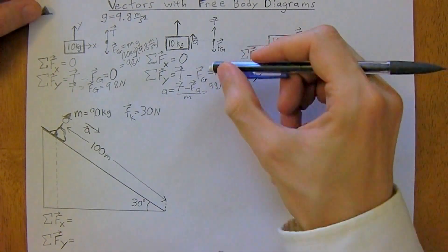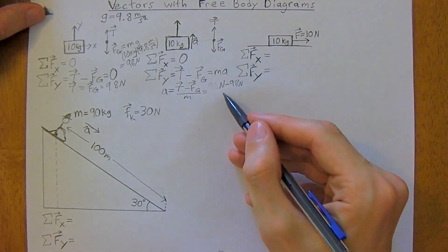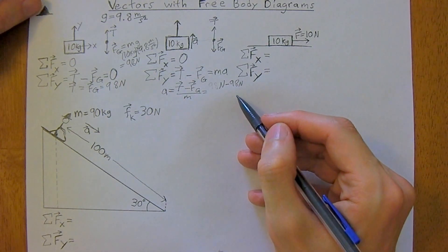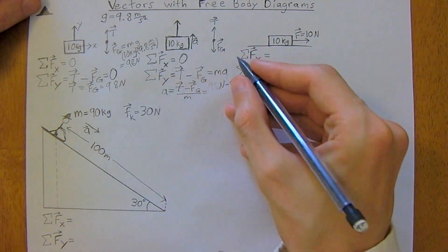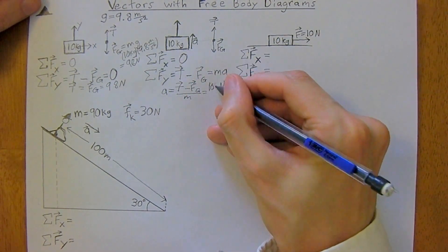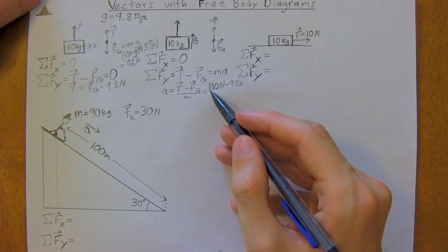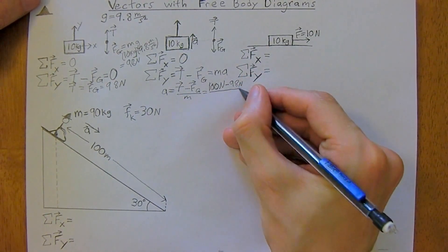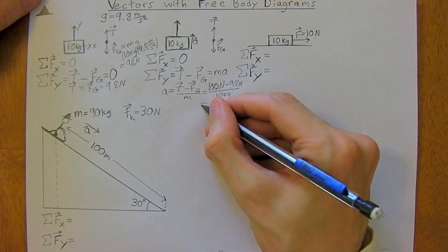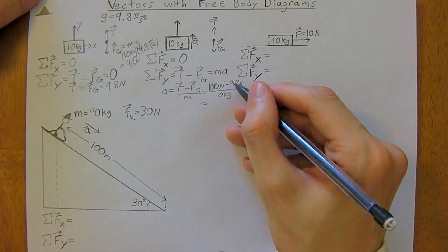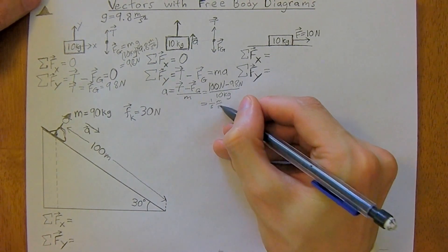So, it wouldn't be able, we wouldn't be able to use the same tension as the past example, because that would just give us zero. But, say we had 100, so just to run through, get used to the units. So, 100 minus 98 divided by 10 kilograms. So, acceleration would be 2 over 10, or one-fifth meters per second squared.